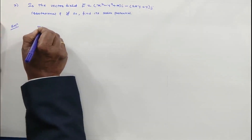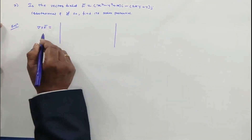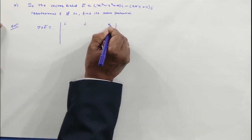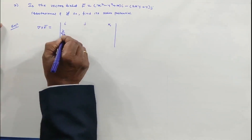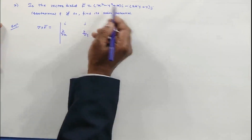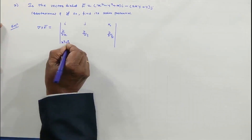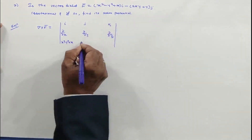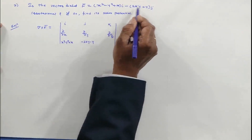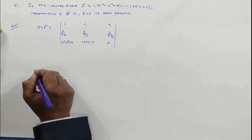For an irrotational field, we start by computing del × F̄, which is the curl of F̄. This is evaluated using a determinant: the first row contains i, j, k; the second row contains the del operators; and the third row contains the components of the given field — the coefficient of i, the coefficient of j, and the coefficient of k is 0.